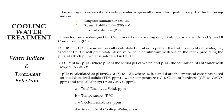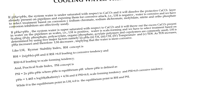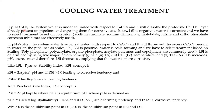If pH actual is less than pH saturated, the water is undersaturated with respect to calcium carbonate. It will dissolve the protective calcium carbonate layer already present on pipelines, exposing them to corrosive attack. A negative LSI means water is corrosive, and treatment should be selected based on corrosion control — sodium chromate, sodium dichromate, molybdate, nitrate, and orthophosphate corrosion inhibitors are effectively used.